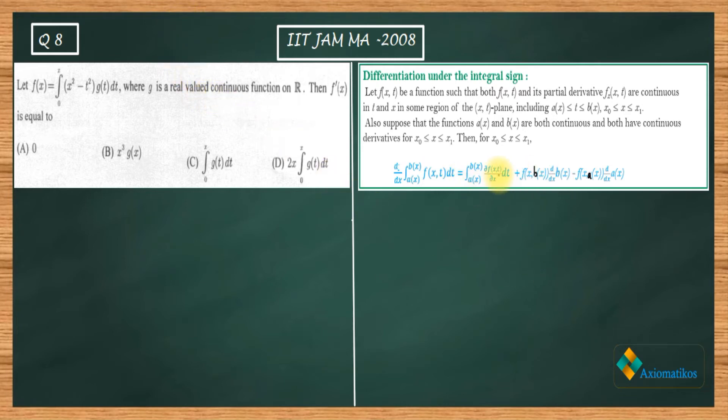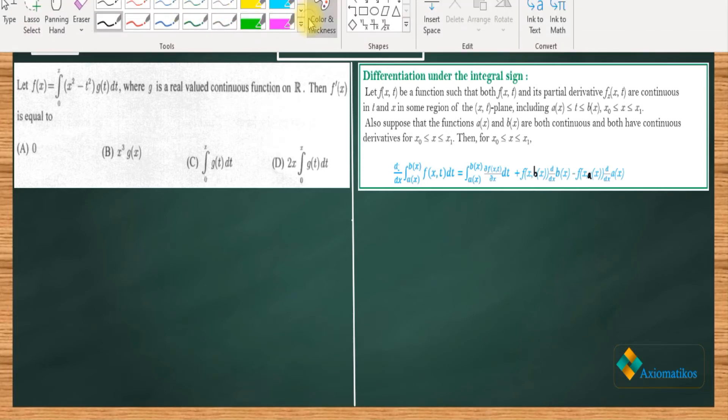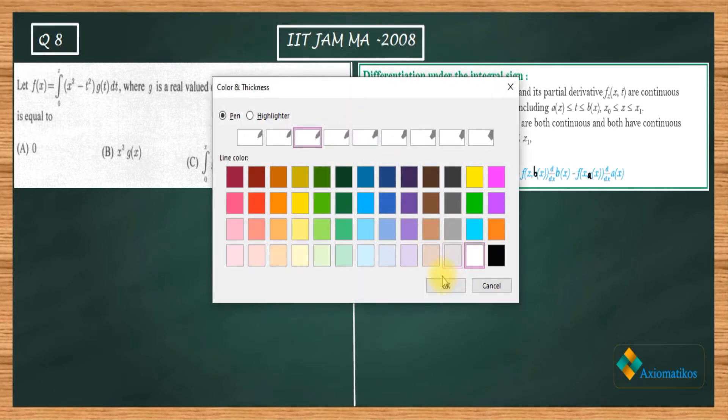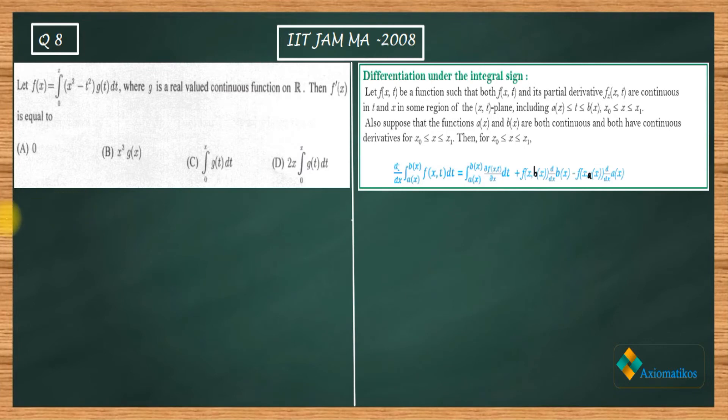There was a typo in the formula that I have written, so I have corrected it now. What I will do is when I use this, I will tell you what was the typo. I am not going to read this formula; I will directly apply and then you will be automatically used to it. So now let us start.